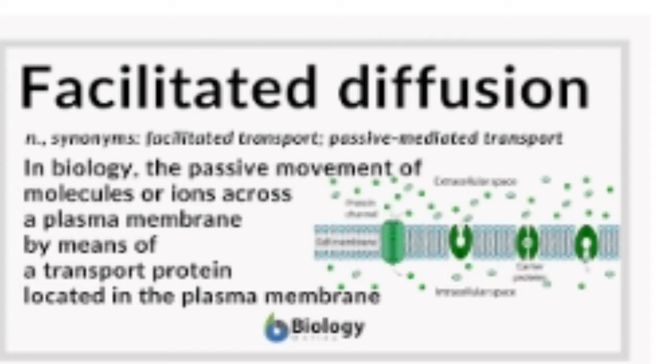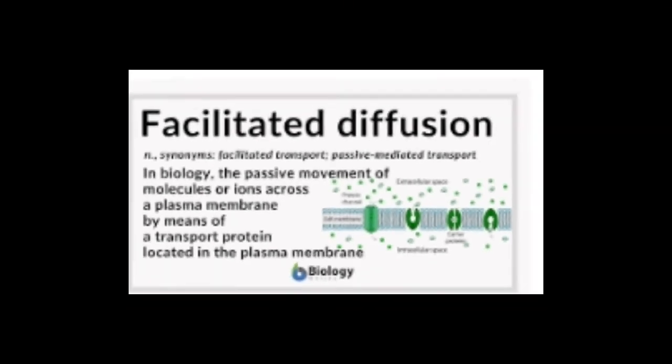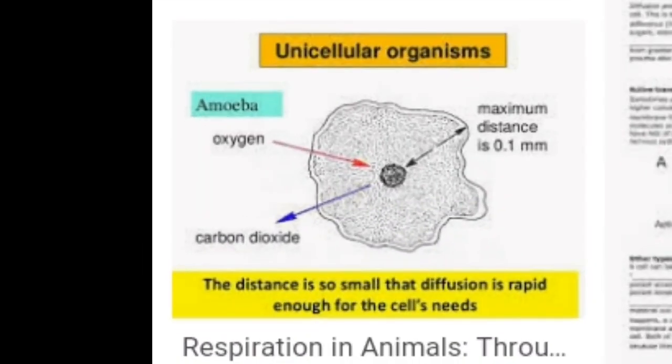In single-celled animals, oxygen is taken in from the external environment into the body by diffusion, and carbon dioxide is given out to the external environment by the same process. The gases diffuse through the general body surface.